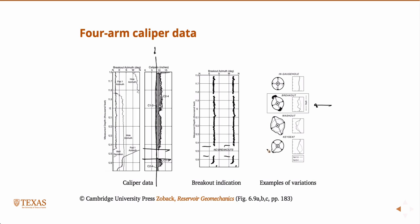There's also key seats, typically associated with deviated or horizontal wells. This could appear to be a breakout but only on one side of the well. This is typically associated with horizontal drilling where you have part of the drill string laying on one side of the wellbore and rotating. It causes friction which can cause a key seat to occur on one side of the wellbore. This is not a breakout. If you see that in your caliper data, you don't want to interpret it as a breakout and try to make inferences about the state of stress in the wellbore.